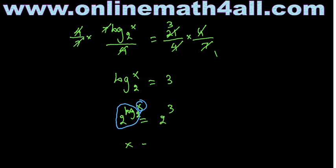Applying the identity, the left side simplifies to X, and the right side is 2 to the power 3, which equals 8. Therefore, the value of X is 8. Apart from the fundamental laws of logarithms, knowing these tricks is very useful for solving difficult problems, especially in competitive exams.